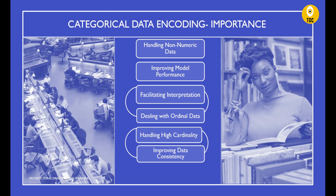Another benefit is improving data consistency. Encoding helps standardize the representation of categorical data across different datasets, making it easier to compare, combine, and analyze data from multiple sources. Finally, proper encoding can help in feature engineering, enabling the creation of new features that capture important relationships between categorical variables and the target variable.